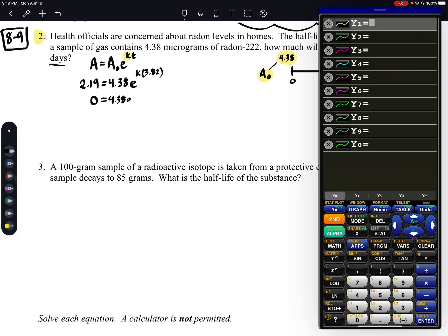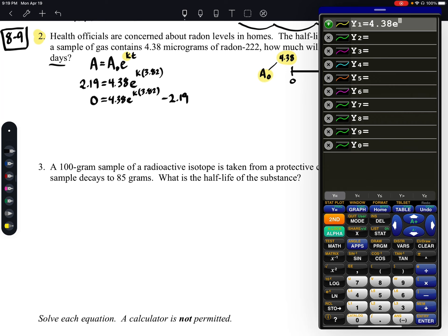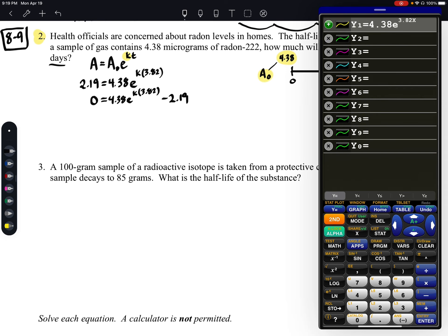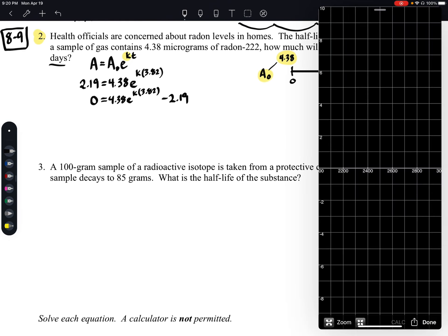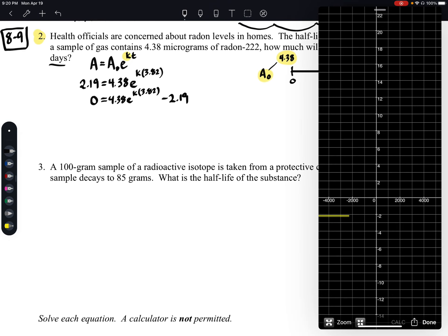You don't have to write out this part on your paper if you don't want to. I'm sure a lot of you are comfortable with knowing what to type in by now. But I'm going to do 4.38 times E raised to the power of 3.82X, and then we're going to subtract 2.19. Okay, so when we do this, we're going to want to look for our X intercept. It looks like my graph is zoomed way out.